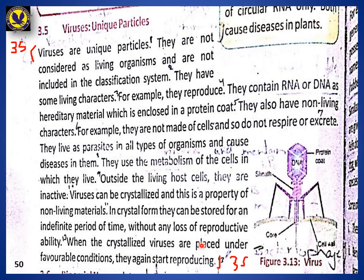So this whole paragraph is about how virus is a very unique particle. You cannot consider it a living organism, which is why it is not included in the five kingdom classification. Viruses have some characters of living organisms — such as the ability to reproduce — but they also have non-living characters.